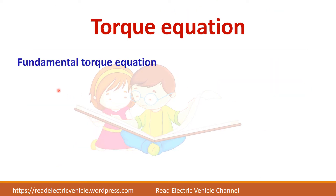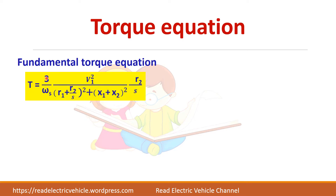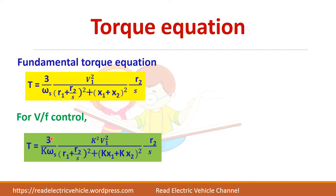The fundamental torque equation for normal rated voltage and frequency is used as the basis. For V by F control, we change both voltage and frequency together. In the modified torque equation, wherever voltage appears we substitute K times V, and for the frequency term in the reactance, another K factor is included. This gives us the torque equation for V by F control.